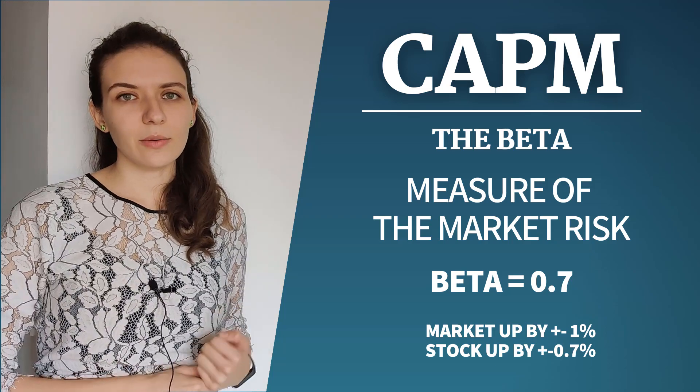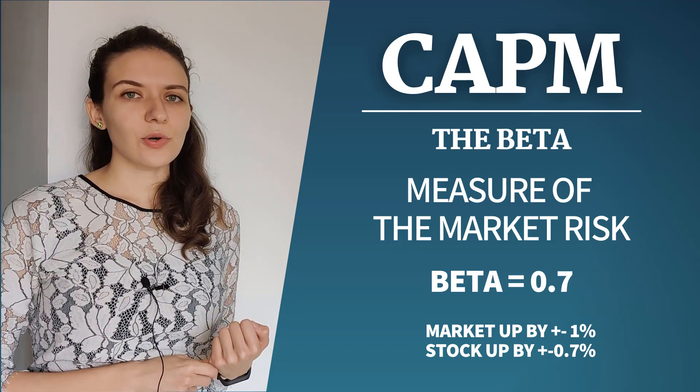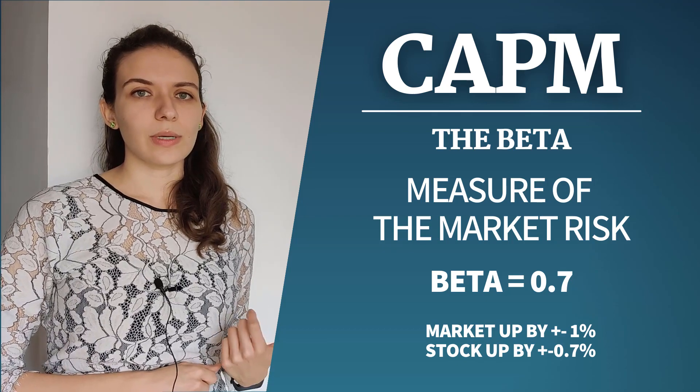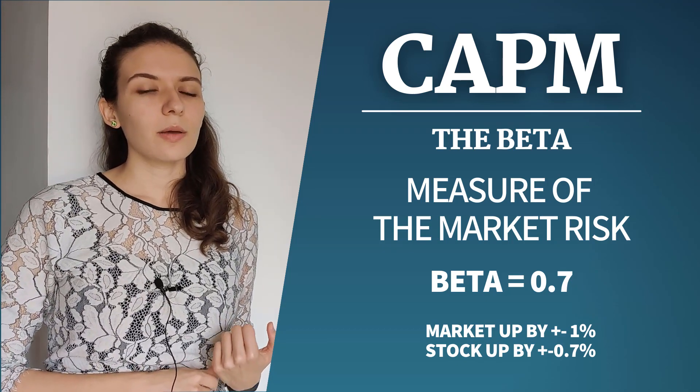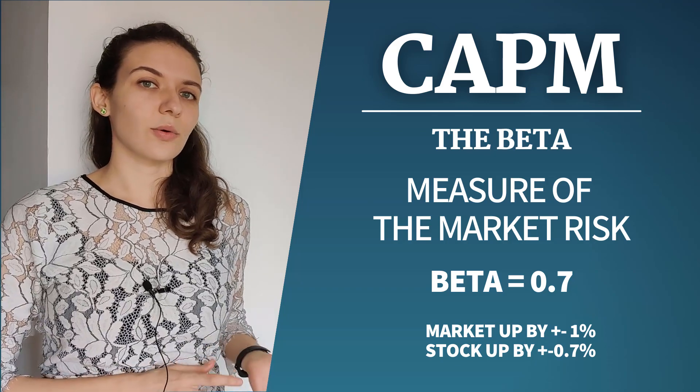Finally, a beta smaller than 1 indicates that the stock is more defensive than the market. So it will lose you less money in a market downturn, but it also gives you less upside potential when things go well.